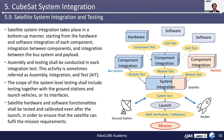This brings us to the last section in this chapter covering system integration and testing. Satellite system integration takes place in a bottom-up manner starting from the hardware and software integration of each component, integration between components, and integration between the bus system and payload. Assembly and testing shall be conducted in each integration step — this activity is sometimes called assembly integration and test, or AIT. The scope of the system level testing shall include testing together with the ground stations, launch vehicles, and any other interfacing systems. It is important that the satellite hardware and software functionalities shall be tested and calibrated even after launch in order to ensure that the satellite can fulfill the mission requirement.